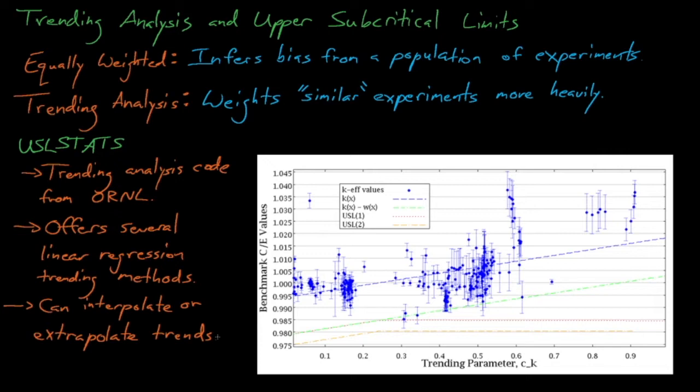Another common metric is the fuel enrichment. And more recently, USL stats-based analyses have started to trend on more rigorous sensitivity-based metrics, such as c sub k, which is something that we'll discuss in detail in the following lectures.